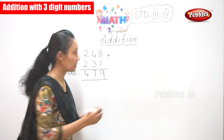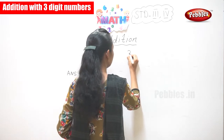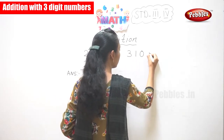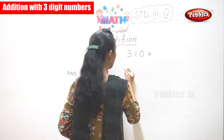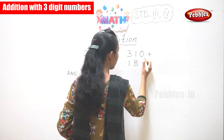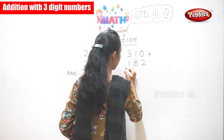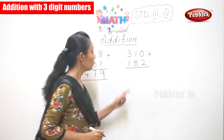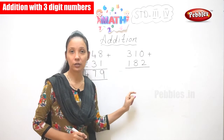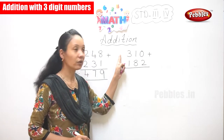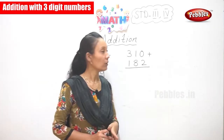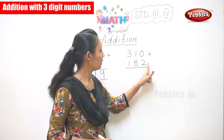Can we do another sum? Yes. 3-1-0 plus 1-8-2. That is, if you had 310 with 182, what is your answer? Now see, children, here it is 0 and 2.